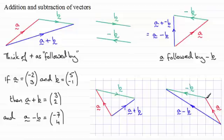Similarly when we take the vector minus b, that's going in the opposite direction to the vector b, so that's going to be (-5, 1). And when we do the vector a followed by the vector minus b, in other words a minus b, we get this result (-7, 4). And you can check it out. We go across 7 units, that's -7, and up 4 units.